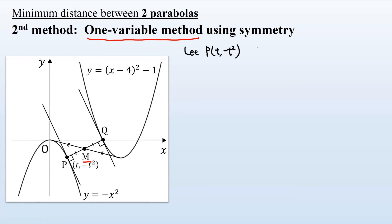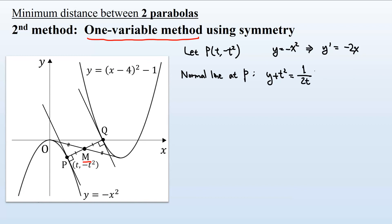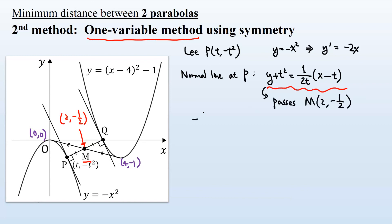Let the coordinates of P be (t, minus t squared). From y equals minus x squared, the derivative is minus 2x, so the normal line at P is: y plus t squared equals (1 over 2t)(x minus t). The vertices of the two parabolas are (0, 0) and (4, minus 1), so the midpoint M has coordinates (2, minus 1/2). This normal line must pass through M.